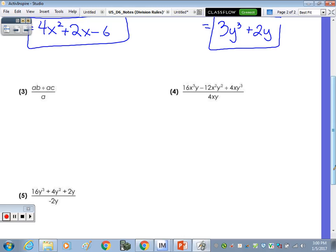What about AB plus AC divided by A? It'd be B plus C. When you do AB over A, the A's would cancel, so you're left with B. And then AC over A, the A's would cancel, and B plus C is correct.